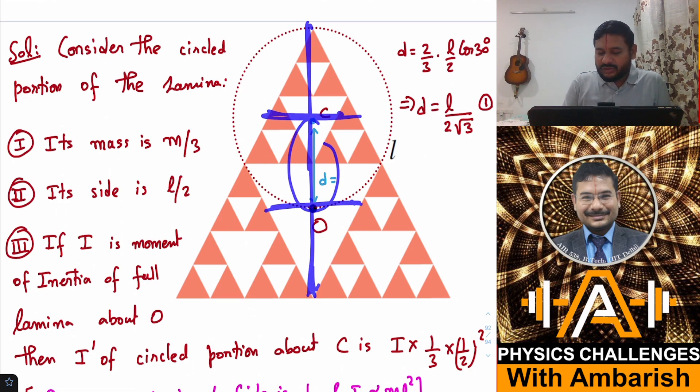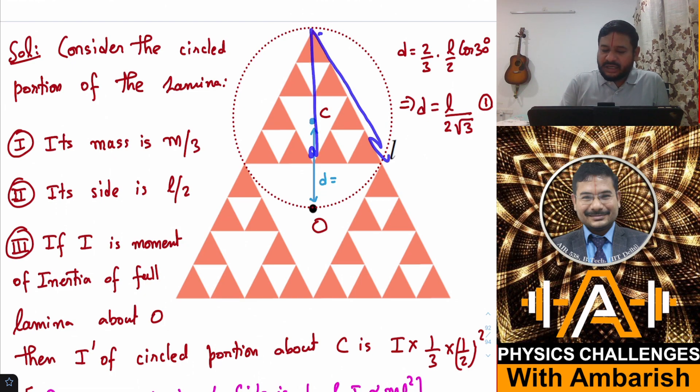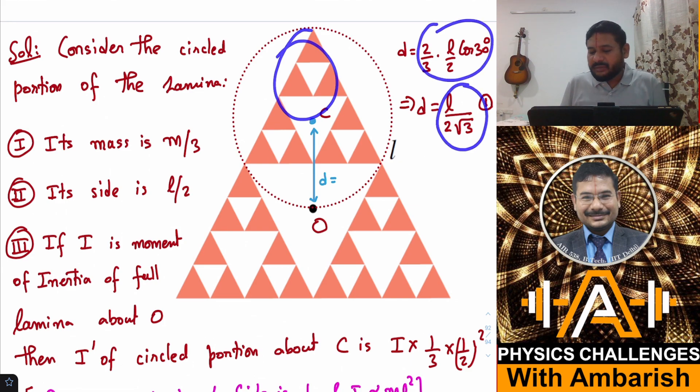This is one third of the whole length, this is one third of the whole length, so this also should be one third of the whole length. This is L/2, so this becomes L/2 cos 30°, and two-thirds of that is L/(2√3).